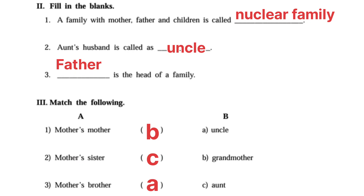Match the following. Mother's mother — B: Grandmother. Mother's sister — C: Aunt. Third one, mother's brother — A: Uncle.